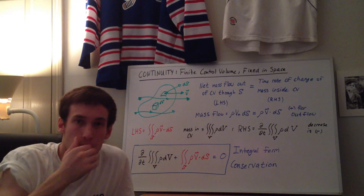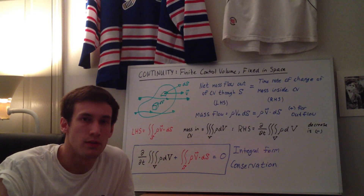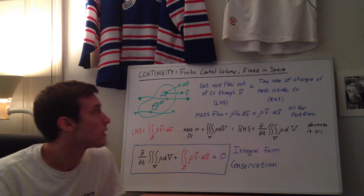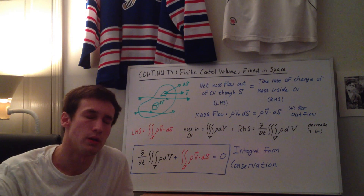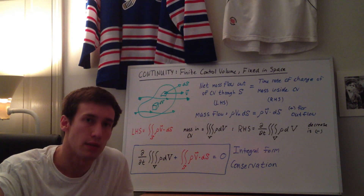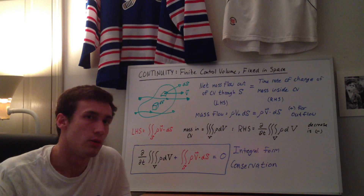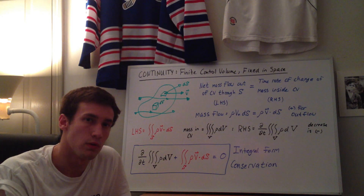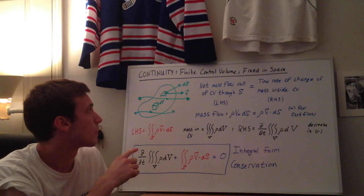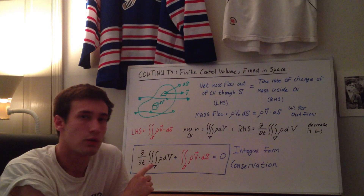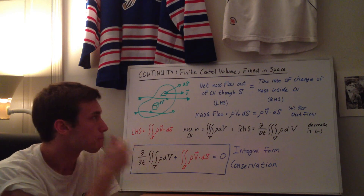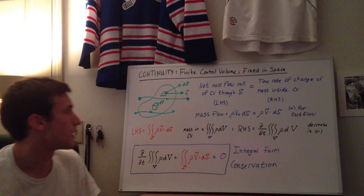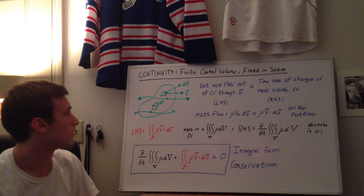Hey everyone, this is the third video I'm doing, if you're going in order, of the derivation of the continuity equation, or the conservation of mass equation. In this one I'm going to be using another one of the four flow models, and I'm going to be using the finite control volume fixed in space, which I have drawn here in this green figure.